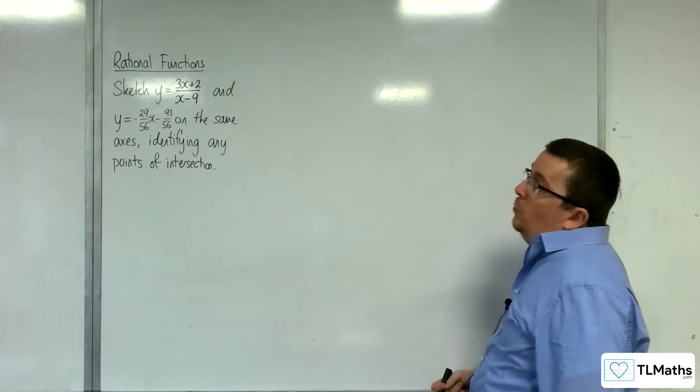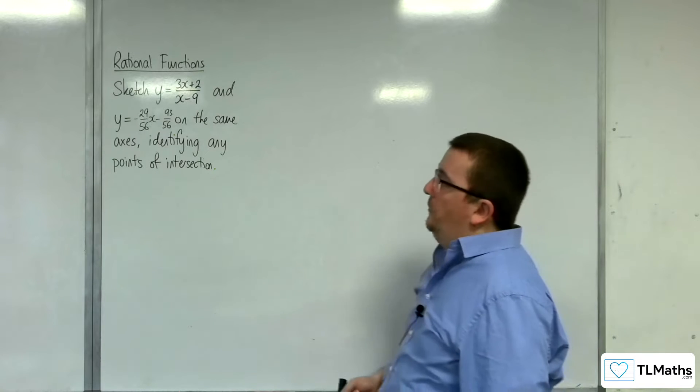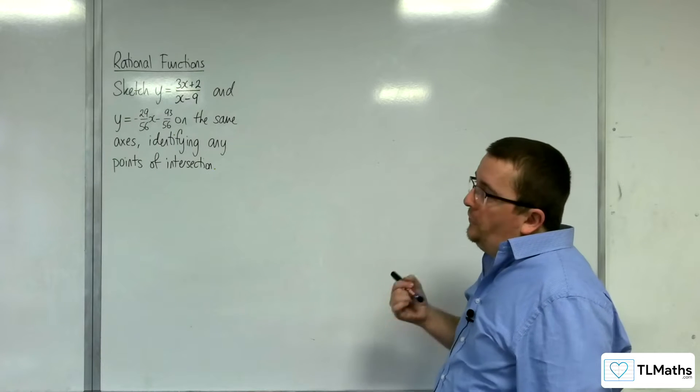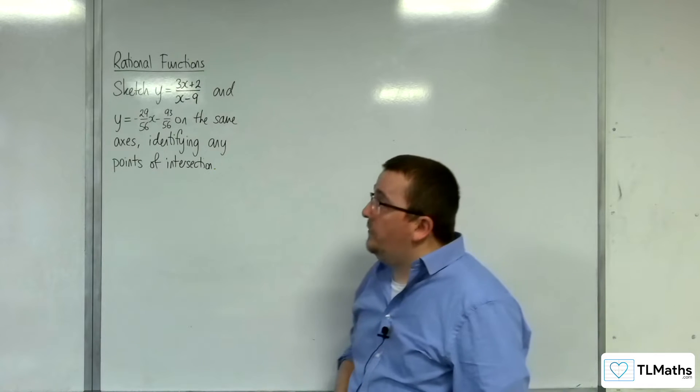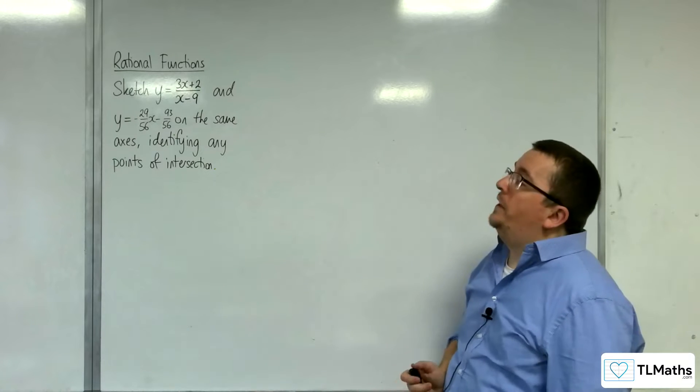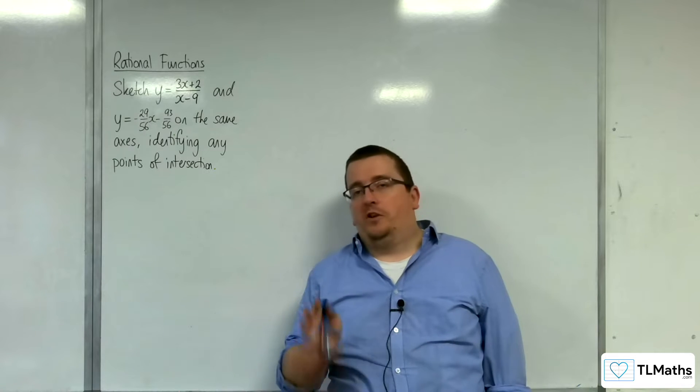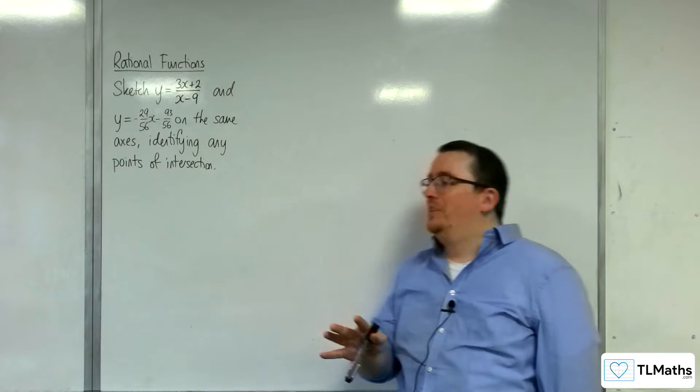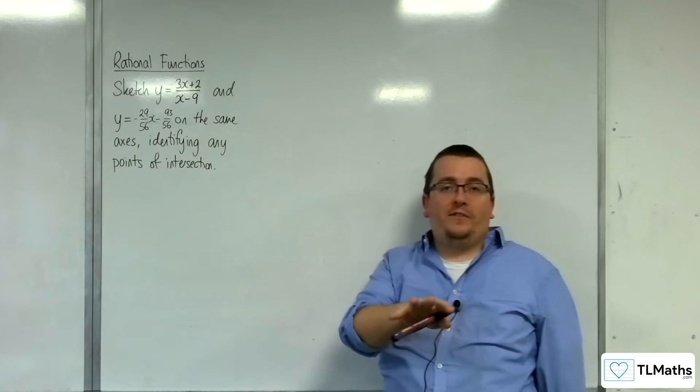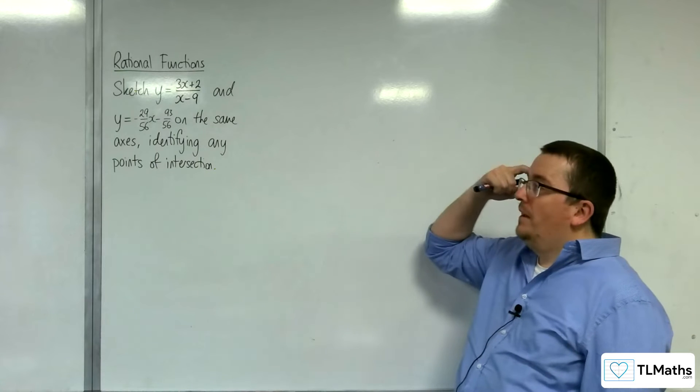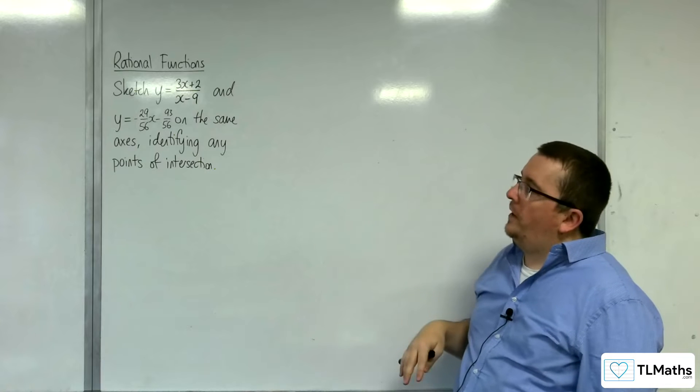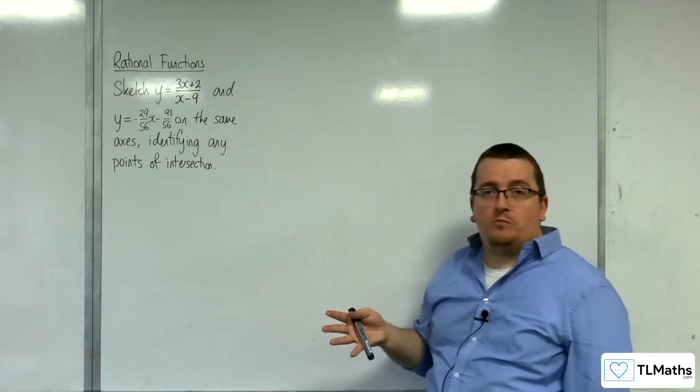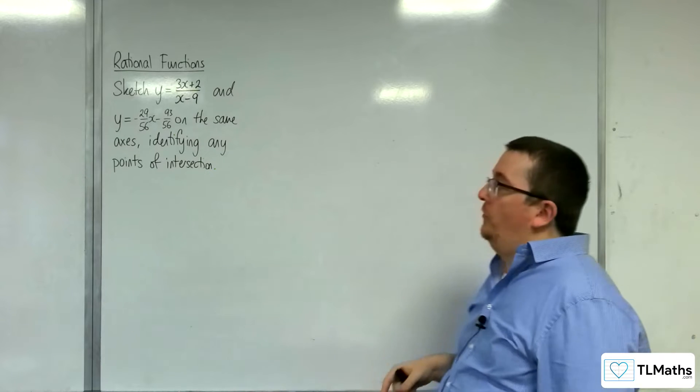So in this video, we're going to sketch y equals 3x plus 2 over x minus 9, and y equals minus 29 over 56x, take away 93 over 56, on the same axes, identifying any points of intersection. So you can probably guess I came up with these numbers myself, but I kind of wanted to try and make some nice numbers come later on in the algebra. So we're just starting off with some nasty numbers.